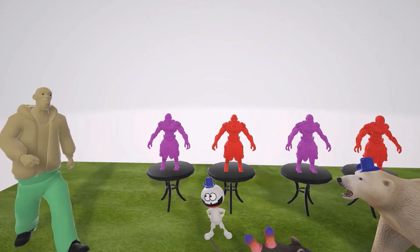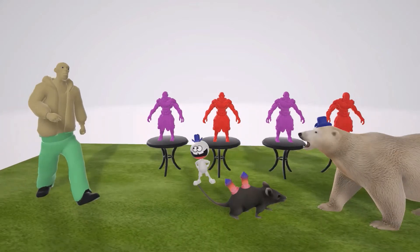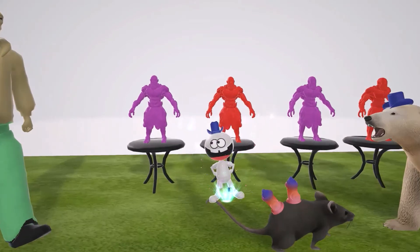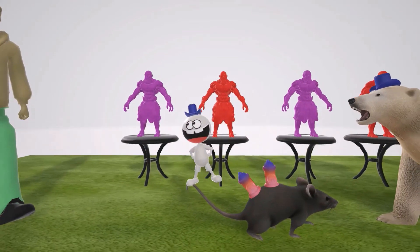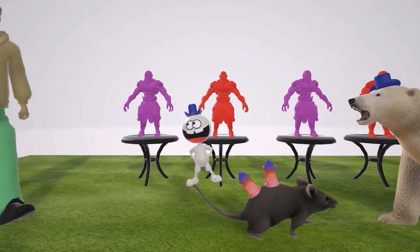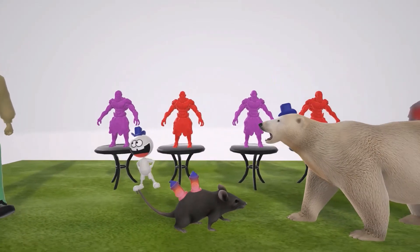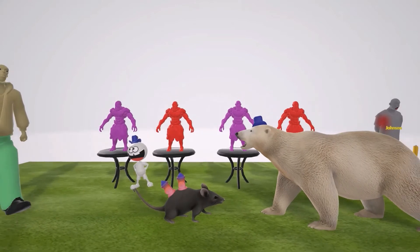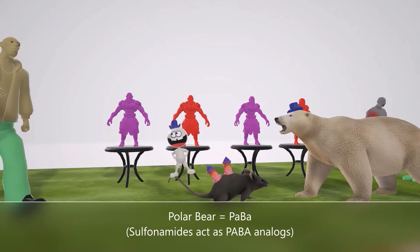Let's start with the mechanism of action of the sulfonamides. The salesman is standing on top of his pet rodent with dyed hydrants on its back — representing dihydropteroate synthase. Sulfonamides work by inhibiting dihydropteroate synthase, and by doing so they inhibit folate synthesis, making them bacteriostatic. More specifically, they act as PABA analogs — represented by the polar bear in the store. The salesman is acting like PABA because he's an analog of it.